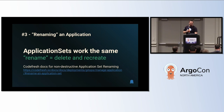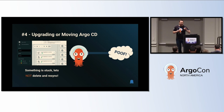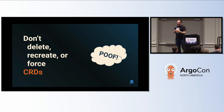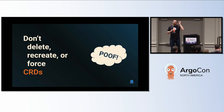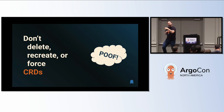Upgrading or moving Argo CD: if you're upgrading and something gets stuck, you delete some things, and suddenly not only is Argo CD gone but all your applications and all their resources are gone. Remember this as a very important rule: don't delete, recreate, or force sync CRDs. If you have a CRD — which applications and application sets are — and you delete that CRD, Kubernetes will automatically delete all the custom resources for that CRD. That means all your applications get deleted, and if finalizers are set, all their resources too.